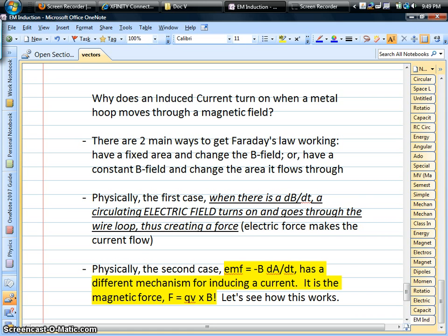Now this particular case, where the area changes and the magnetic field is constant, is exactly how an electric generator works. A wire hoop spins around inside a magnetic field, and that constantly changing flux is causing a changing current, an AC current to turn on. And that's how we produce power at power plants.